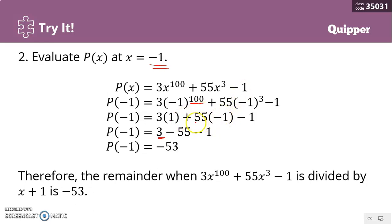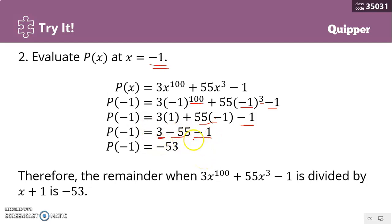For 55 times negative 1 cubed: 3 is an odd number, so a negative base raised to an odd exponent gives a negative result. So 1 raised to 3 is still 1, and 55 times negative 1 equals negative 55. Then we have negative 1 remaining. So 3 minus 55 minus 1 equals negative 53. Therefore, by the Remainder Theorem, the remainder is negative 53.